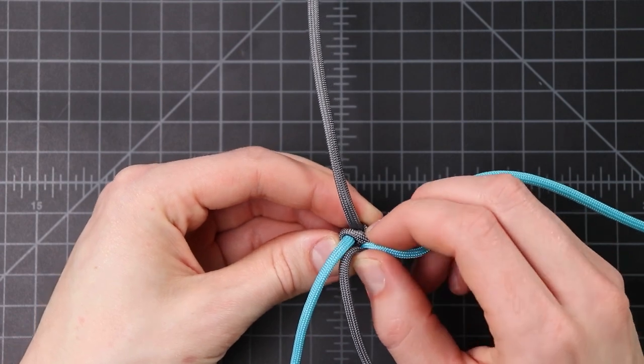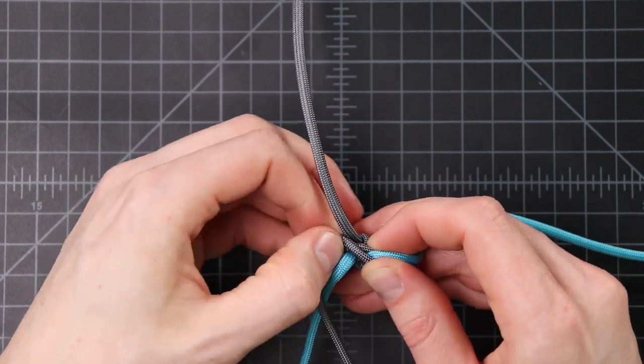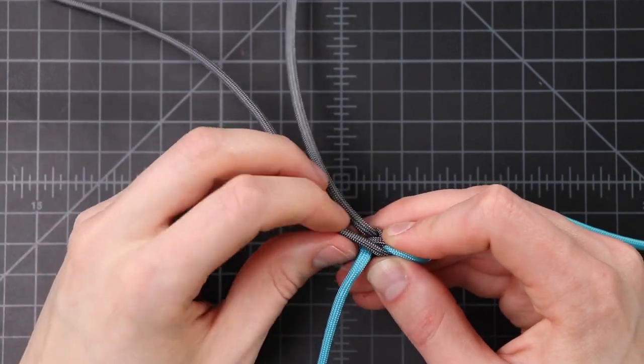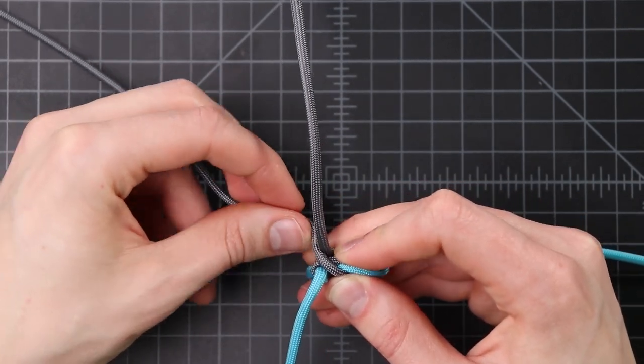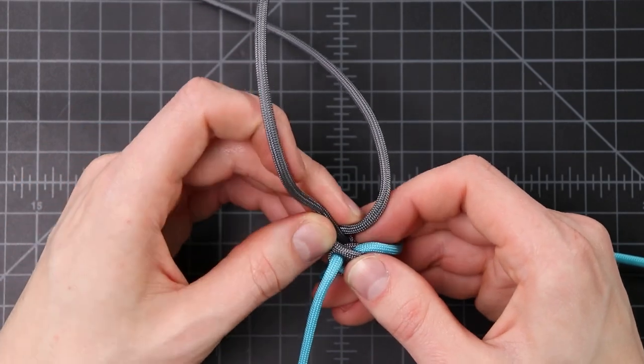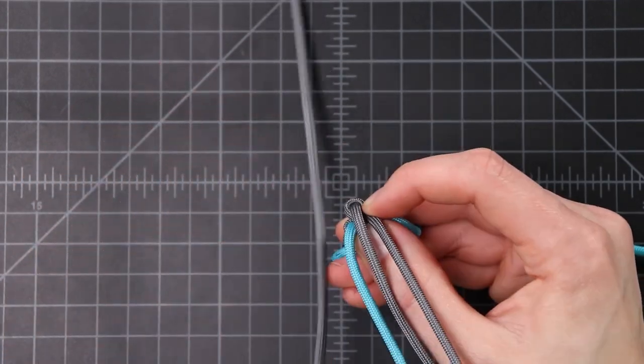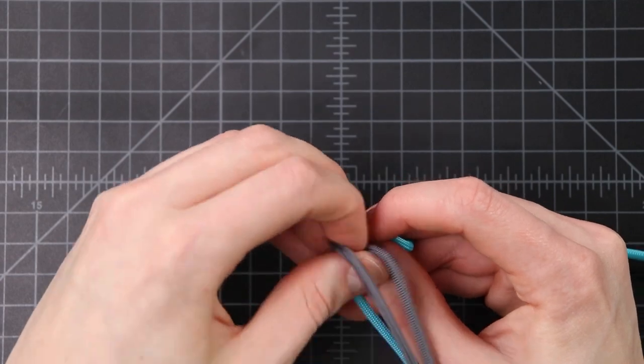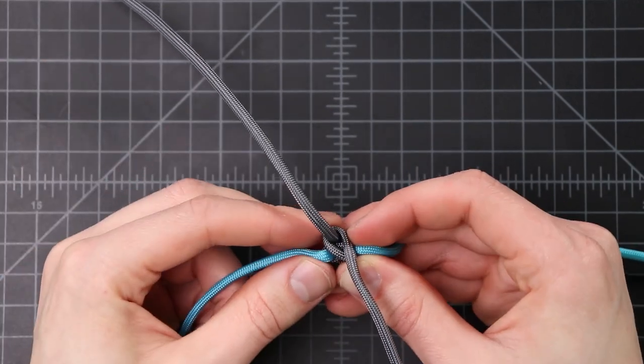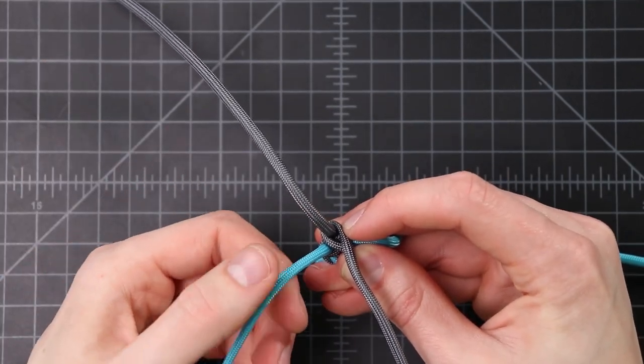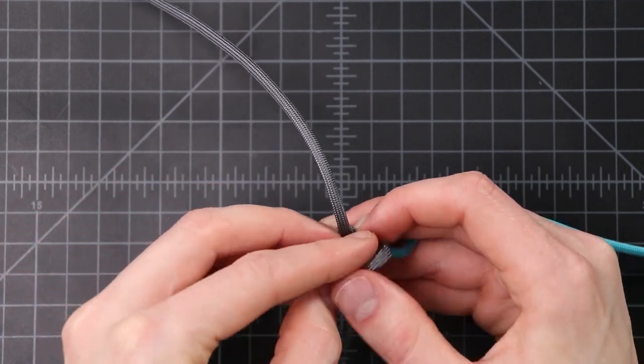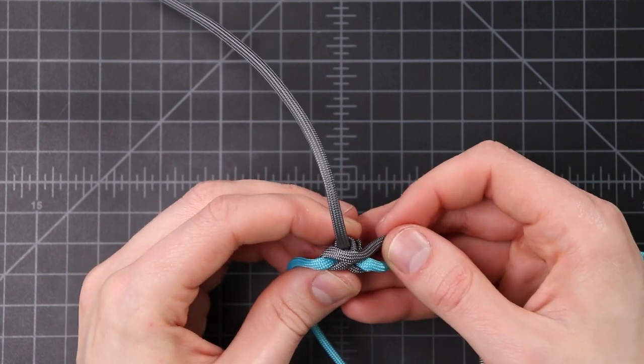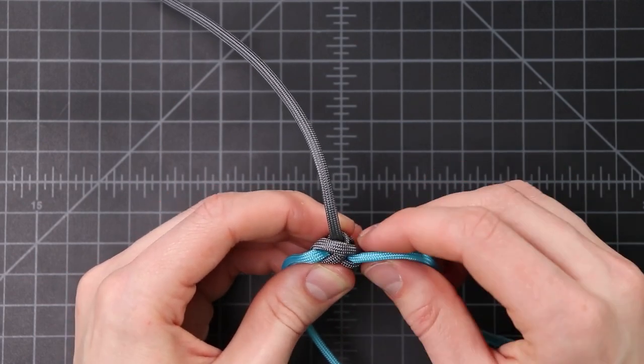So we want to go around that blue strand and we want to come over to this gray strand and come around that clockwise as well. Alright so we wrapped around that one clockwise and now we want to wrap it around this one clockwise to come back to our original strand where we started.